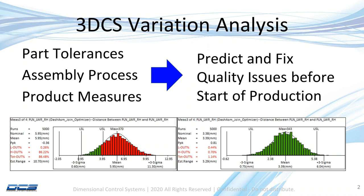Then using Monte Carlo simulation, we can predict quality issues, and by changing tolerances and processes, we can fix these issues and reduce variation. As shown at the bottom of the screen, when we started we had mean shifts and excessive variation — by changing the product and process we can go from red to green. That's our basic package.